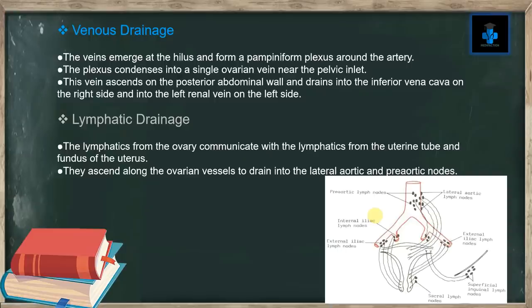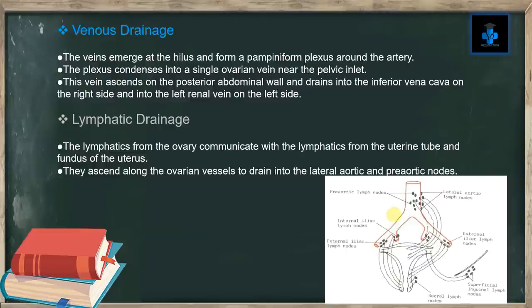Venous drainage: the veins emerge at the hilus and form a pampiniform plexus around the artery. The plexus condenses into a single ovarian vein near the pelvic inlet. This vein ascends on the posterior abdominal wall and drains into the inferior vena cava on the right side and into the left renal vein on the left side. Lymphatic drainage: the lymphatics from the ovary communicate with those from the uterine tube and fundus of the uterus. They ascend along the ovarian vessels to drain into the lateral aortic nodes and the pre-aortic nodes.